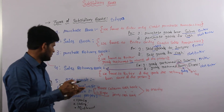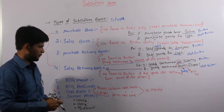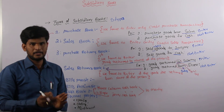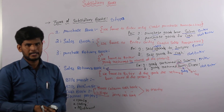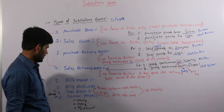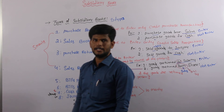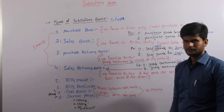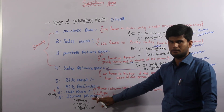In bills receivable we have to identify the debit system. Next one is cash book — cash book is classified into three types and it is also most important for 10 marks: three column cash book, single column cash book, and petty cash book. Each individual problem we are going to solve in our next chapter. And the last one is journal proper — in journal proper we have to identify opening, closing, and adjustment entries. These are all the eight types of subsidiary books.